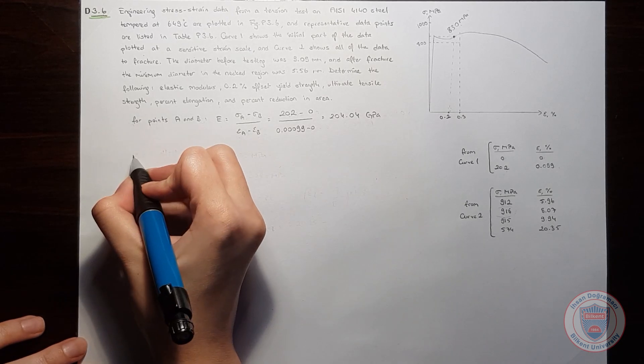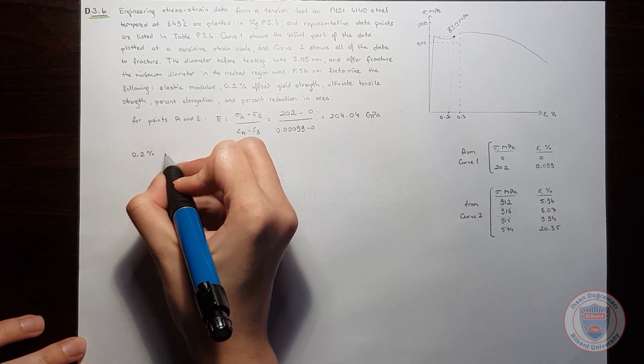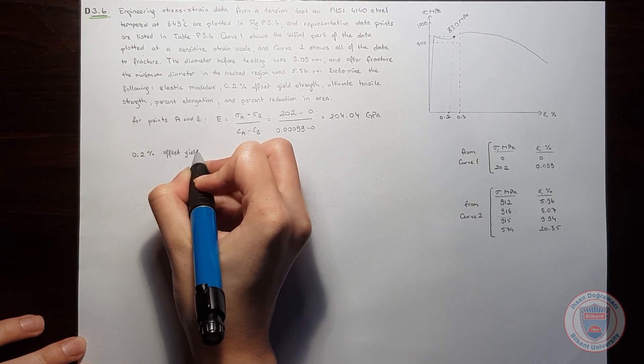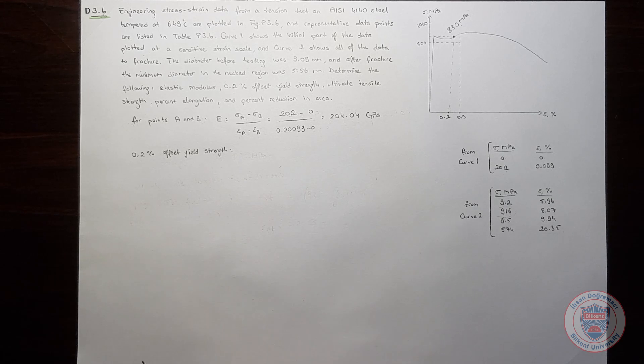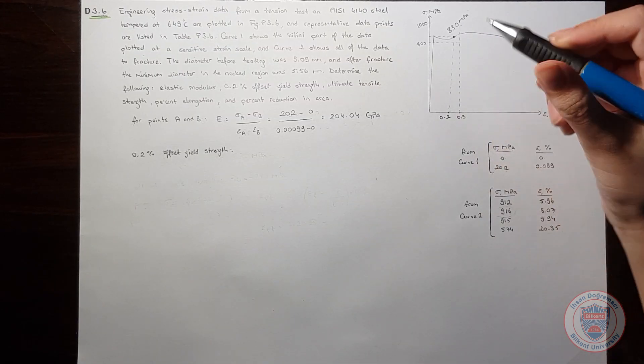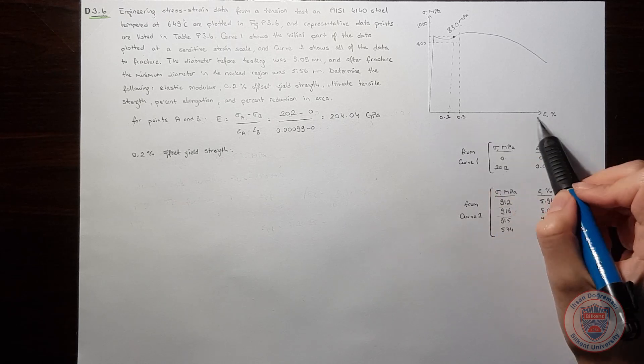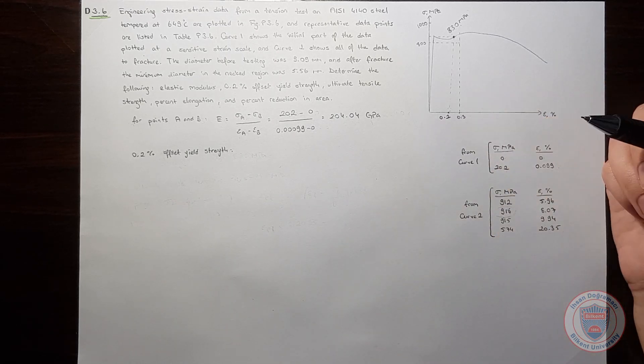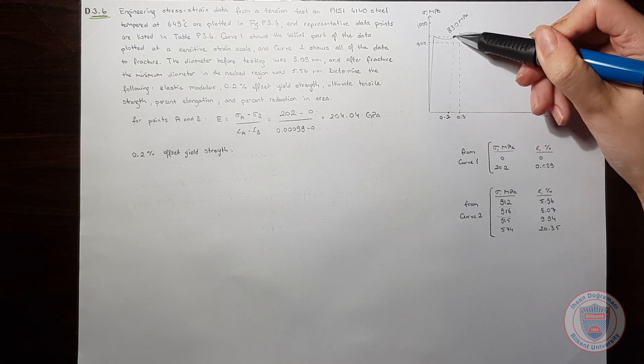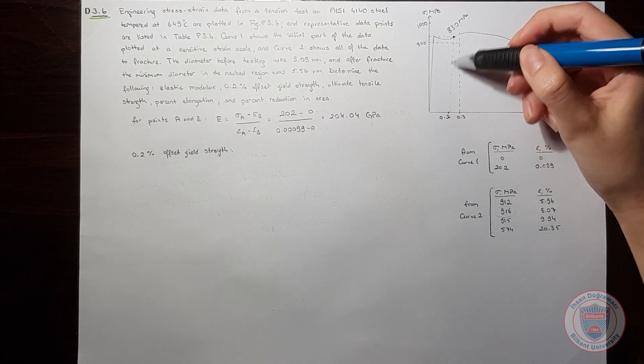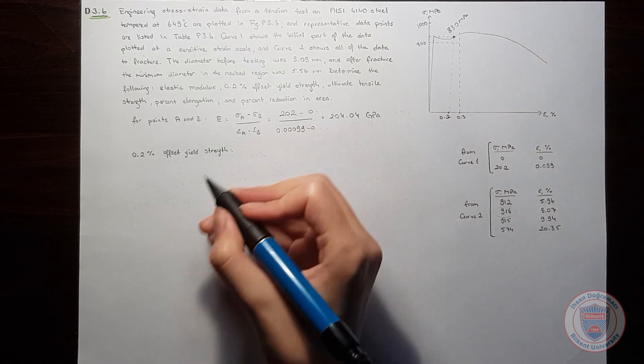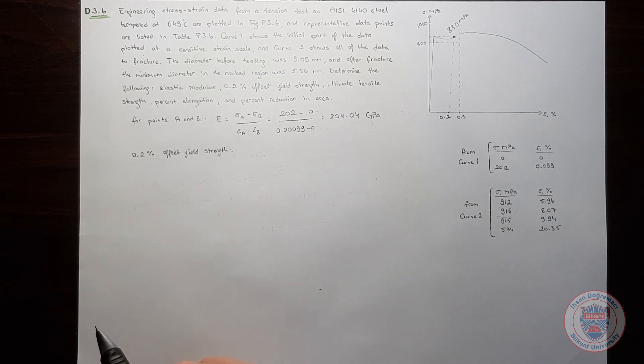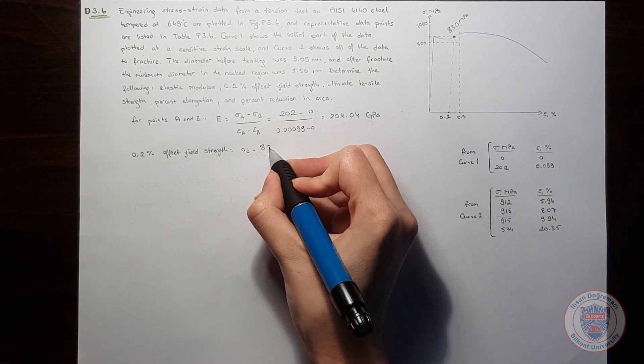Let's start with the 0.2 percent offset yield strength. To find this yield strength, we should draw a parallel line to the curve starting from 0.2 percent elongation point. I already drew this parallel line, and I saw that the point where the parallel line intersects with the curve is 830 MPa. So I can say that 0.2 percent offset yield strength is approximately 830 MPa.